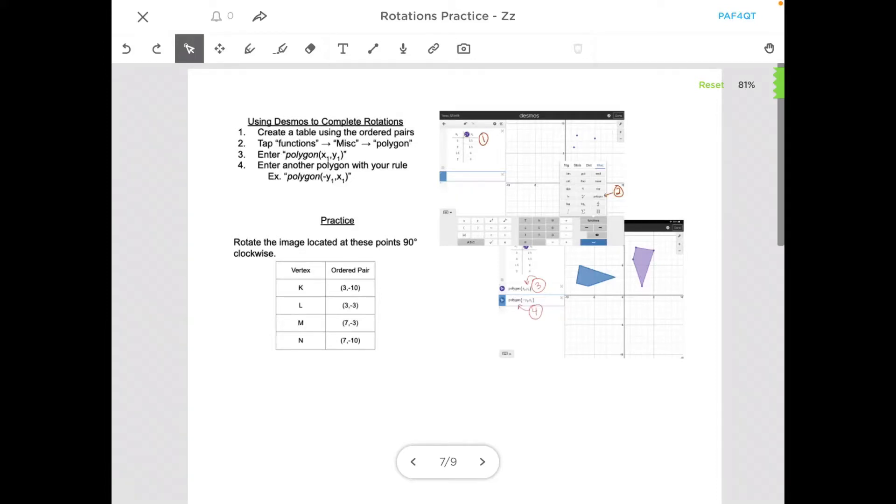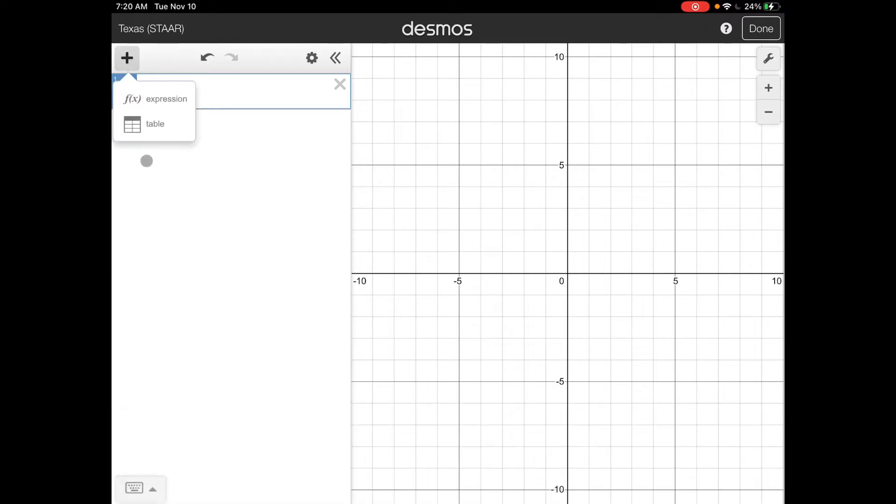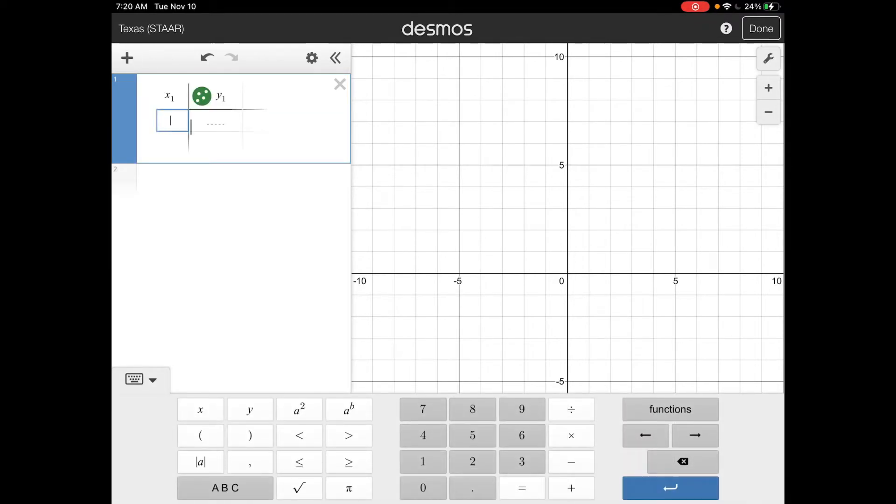All right, today we're going to look at how to use Desmos to complete those rotations, so we'll walk through this practice example so you can see these steps. The first thing it says is to create a table using those ordered pairs, so I'm going to go over to Desmos and input a new table and put those data points or ordered pairs into this table.